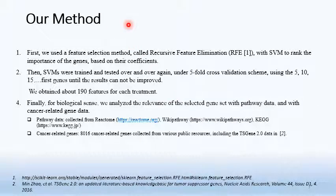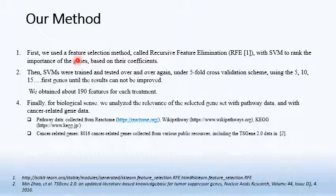In detail, our method first uses a filter selection method called Recursive Feature Elimination (RFE) using SVM to rank the importance of genes based on their coefficients. After ranking the genes, we train SVM again using a five-fold cross-validation scheme, starting with the top 5 most significant genes, then 10, 15, and so on, until results cannot be improved further. We obtain about 190 genes for each treatment.